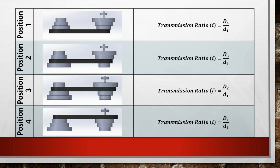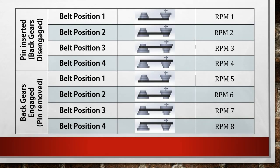The cone pulley gives us four variations in speed. With the back gear arrangement we get eight different speeds: four faster speeds when the pin is connected and four slower speeds when the back gears are engaged.